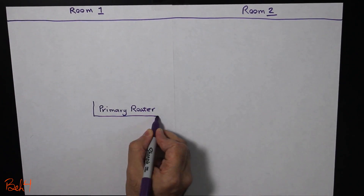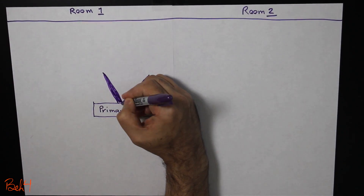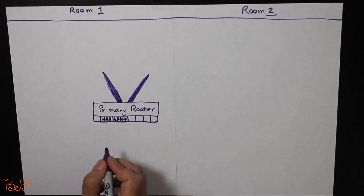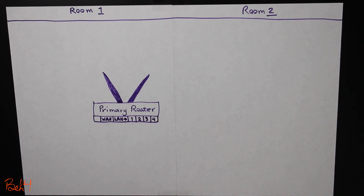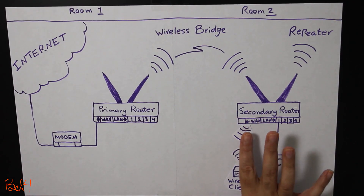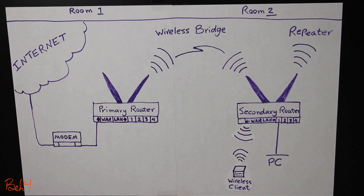The first thing I want to talk about is the subnet mask, which is very important, because in this solution every device on the network, including the primary and secondary wireless routers and all the client devices connected to them, either wirelessly or with wires, are going to be on the same subnet. Therefore, the IP address we choose for the secondary router should also be on the same subnet as the primary wireless router.